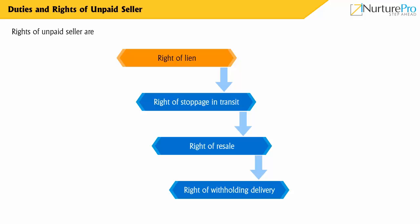According to Section 46-1, an unpaid seller has the right of lien if there is no condition of credit on the goods sold, if the term of credit for goods sold on credit has expired, or in the event of insolvency of the buyer.